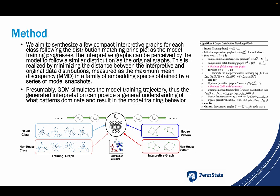We synthesize a few compact interpretive graphs for each class following the distribution matching principle. As the model training progresses, the interpretive graphs are perceived by the model to follow a similar distribution as the original graphs. This is realized by minimizing the distance between the interpretive and original data distributions, measured as the maximum mean discrepancy in a family of embedding spaces obtained by a series of model snapshots.